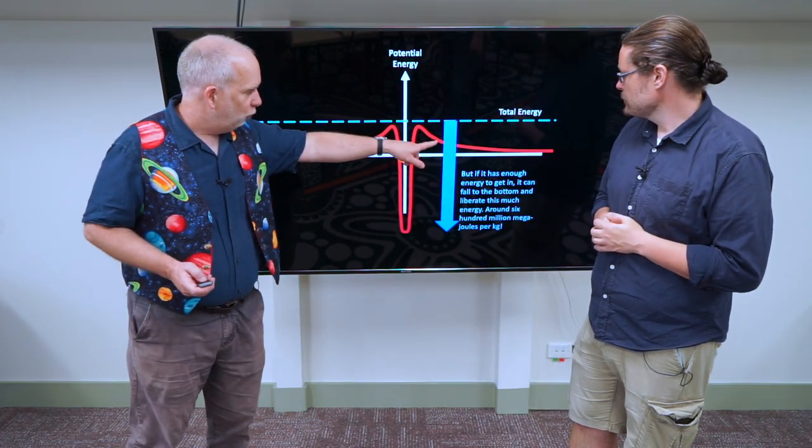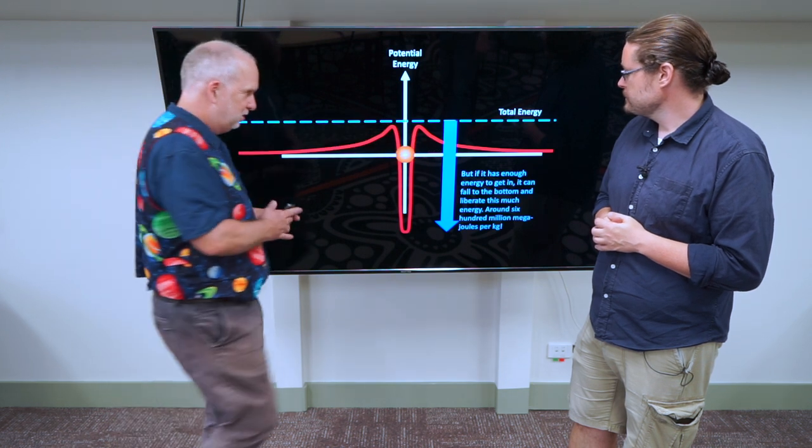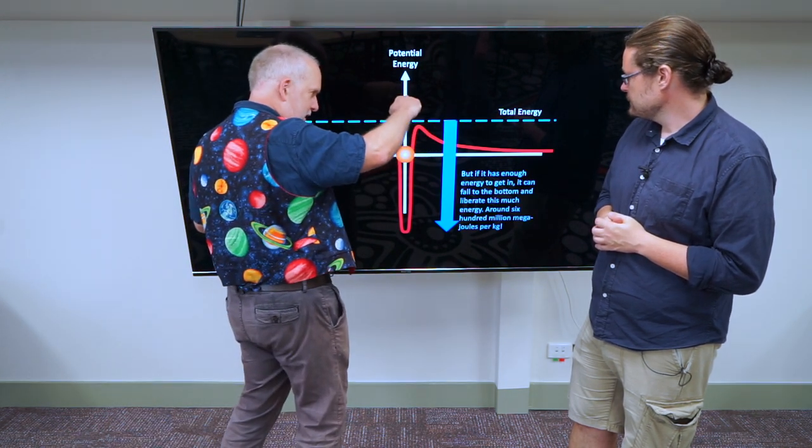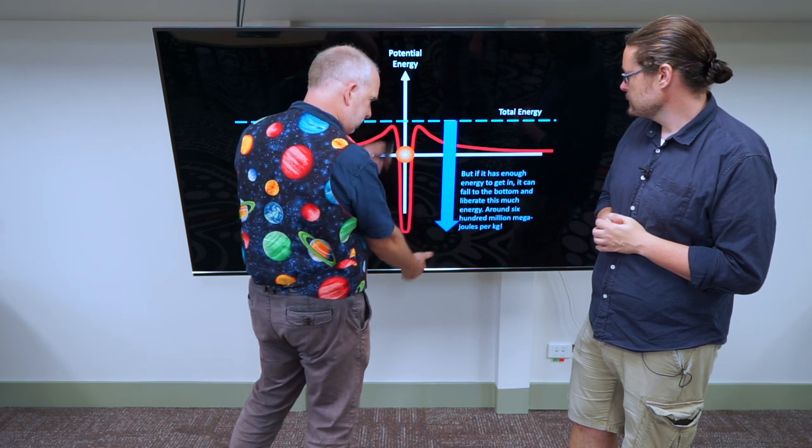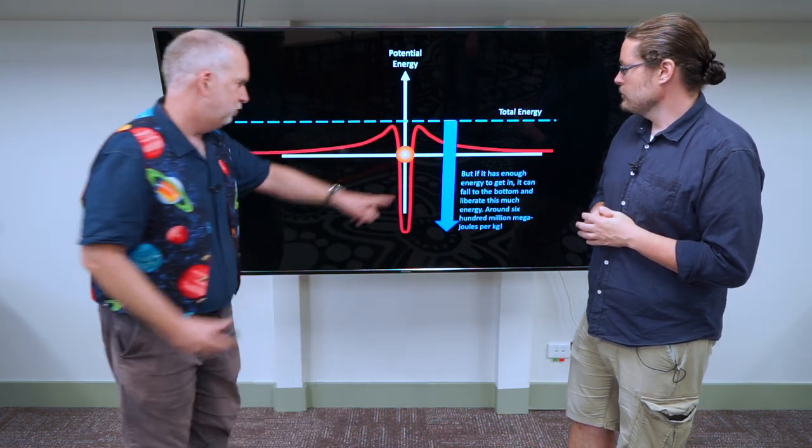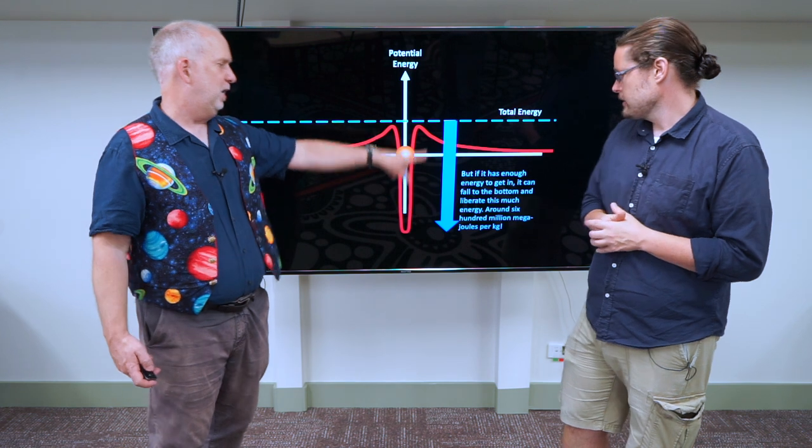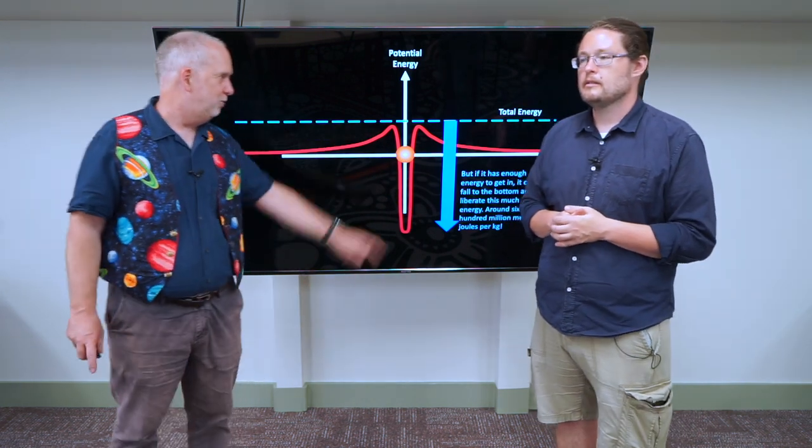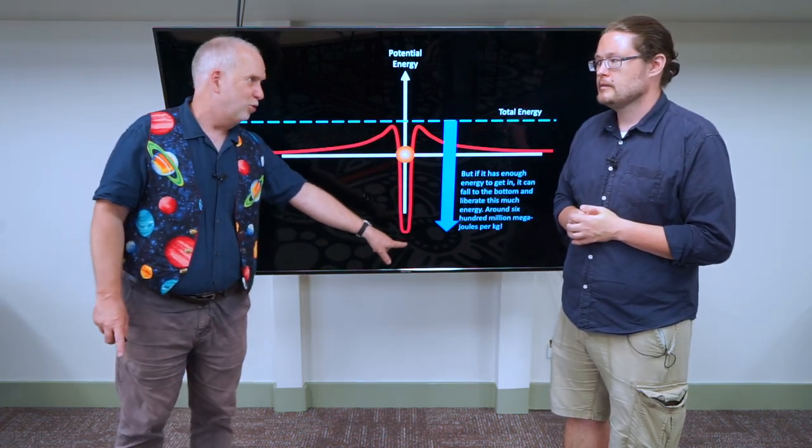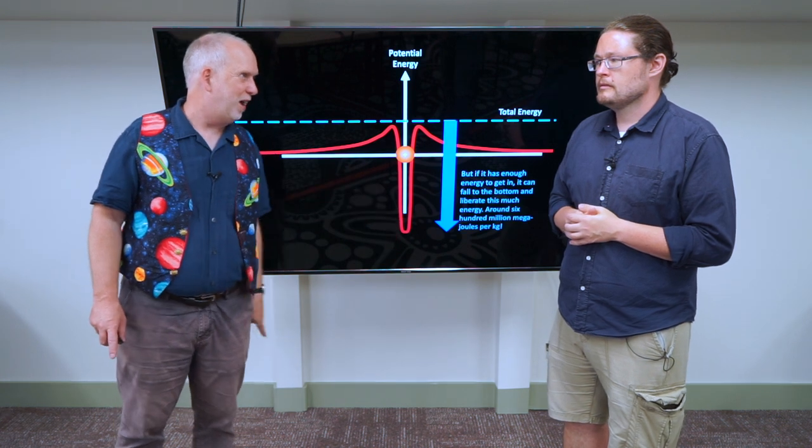But if you do, if your total energy is enough to get over the lip, then it can fall down and liberate a colossal amount of energy. It's about 600 million megajoules per kilogram if you can actually get these protons close enough that they can fall down into nuclei.